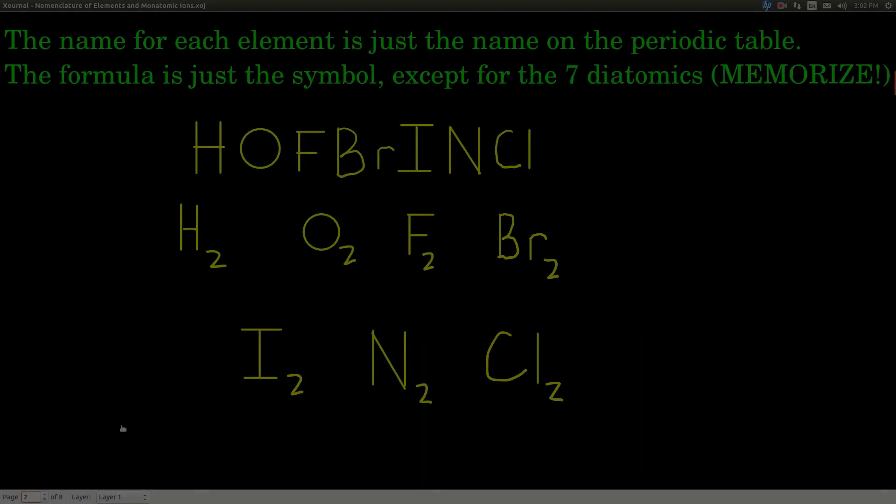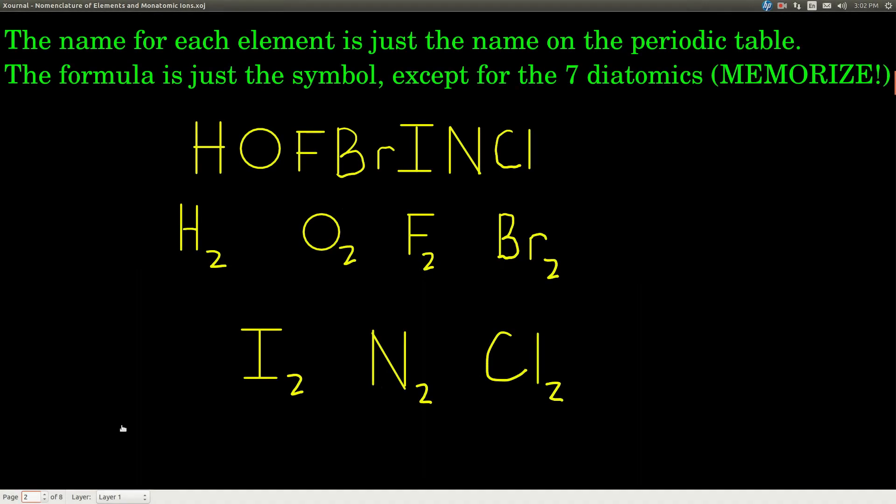Let's start with elements. Elements are just - the name of them is just the same name as in the periodic table. And the formula is just the symbol that's in the periodic table. Easy as that.